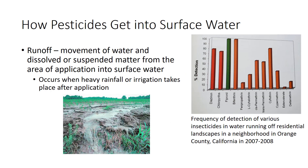Surface water contamination occurs through direct application, usually by accident, or through drift or runoff. It is illegal to spray a body of water unless for control of aquatic organisms, or to drain spray equipment into or near water sources. Use best management practices to reduce drift as previously discussed. Runoff is one of the most common ways that surface water can become contaminated. It is the movement of water and dissolved or suspended matter from the area of application into surface water or onto neighboring land, and is likely to occur when heavy rainfall or irrigation takes place after an application.